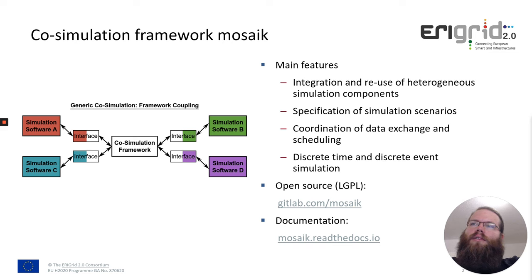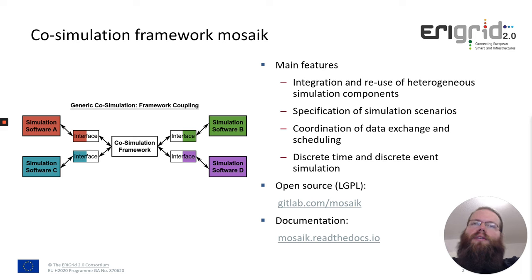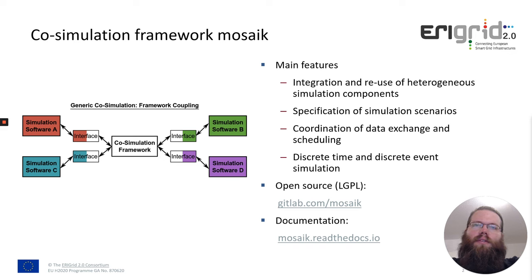As you can see here on the left hand side, the idea of a co-simulation framework is that the framework defines the interface, and each simulation software which fits to this interface and has implemented it can then communicate to the co-simulation framework. This allows you to easily connect many simulation software or simulation components together and integrate them. The framework has to allow specifying simulation scenarios for the coupled components, and then coordinate data exchange and scheduling — taking care of which point in time each simulation component should be executed.